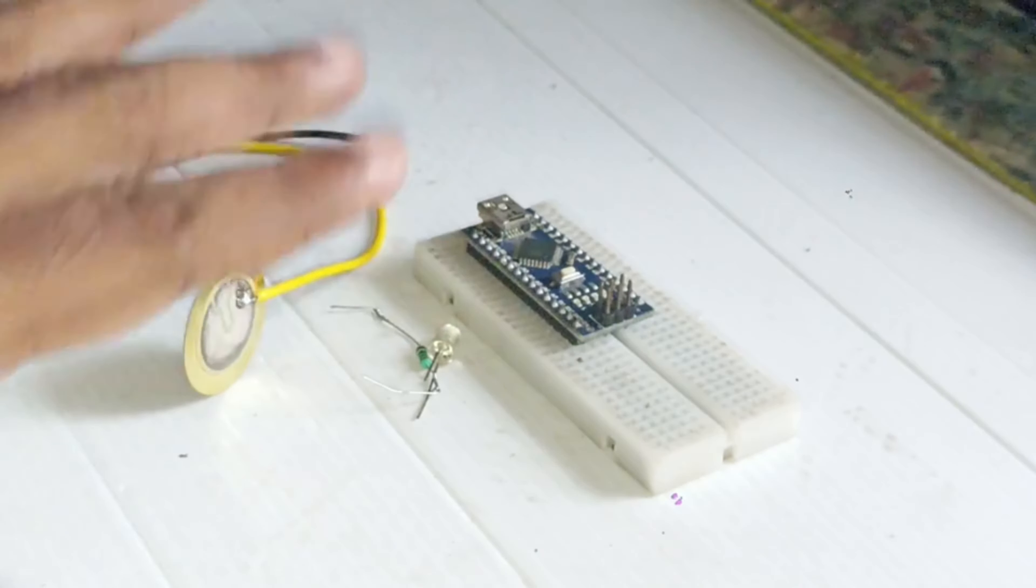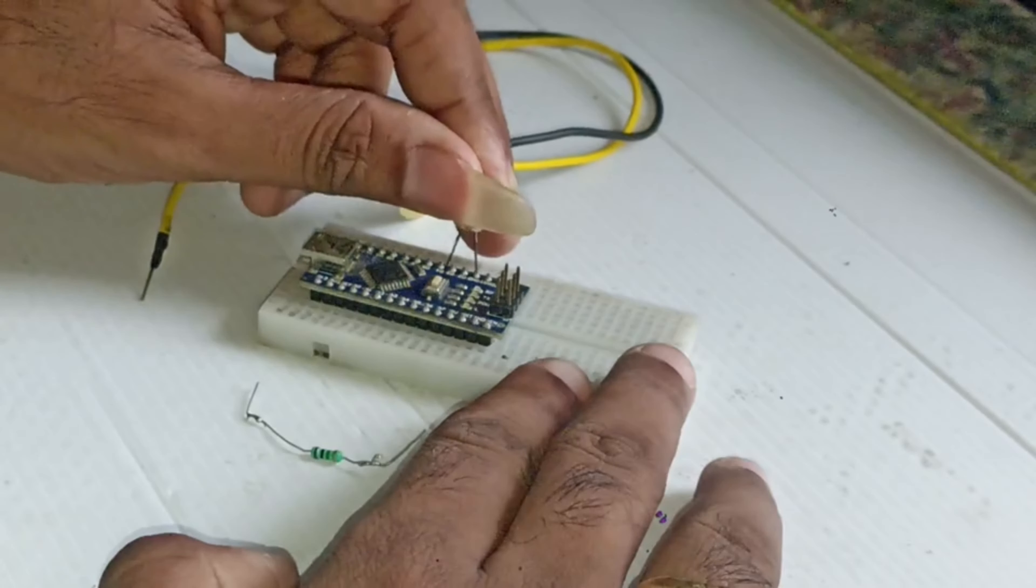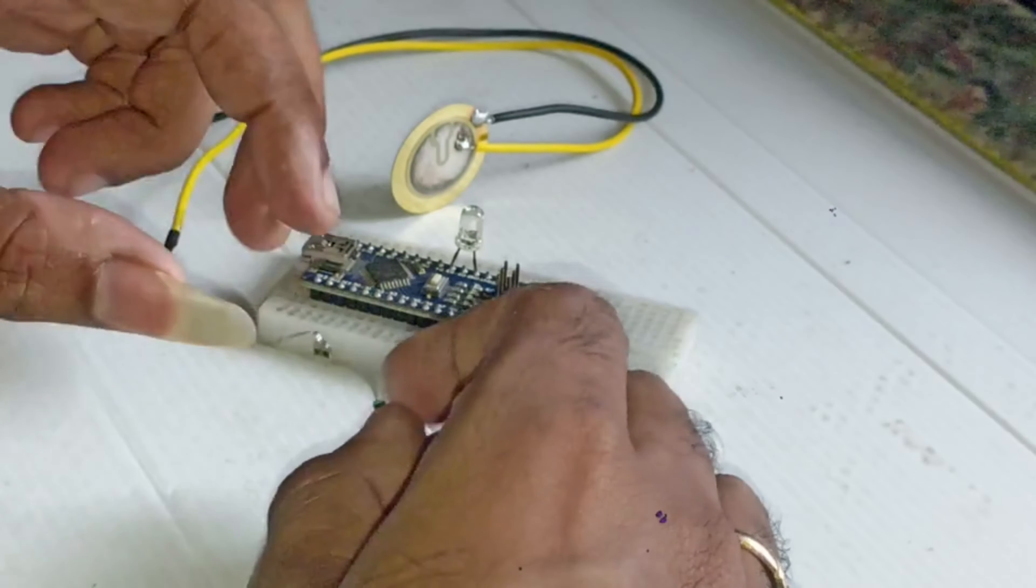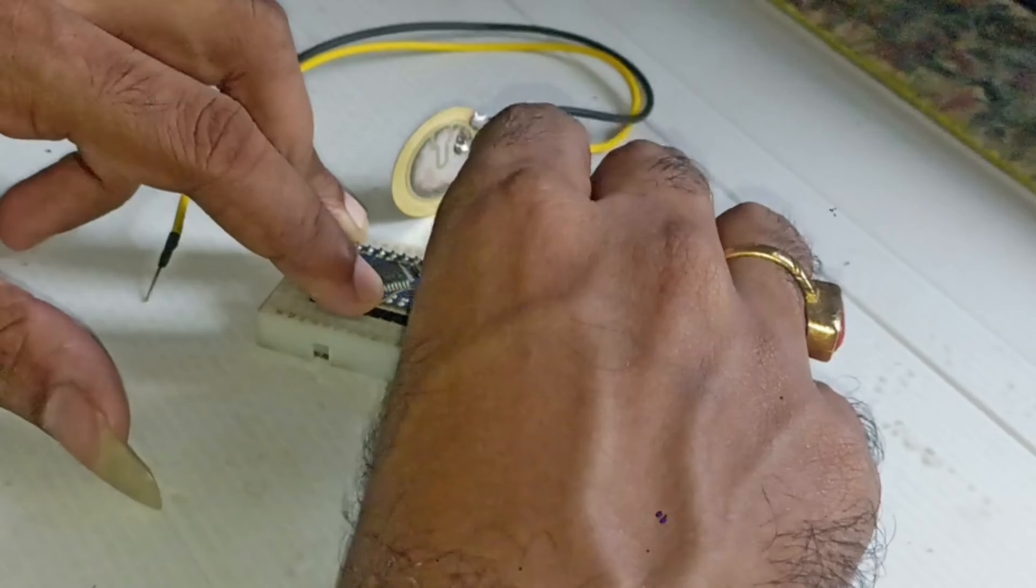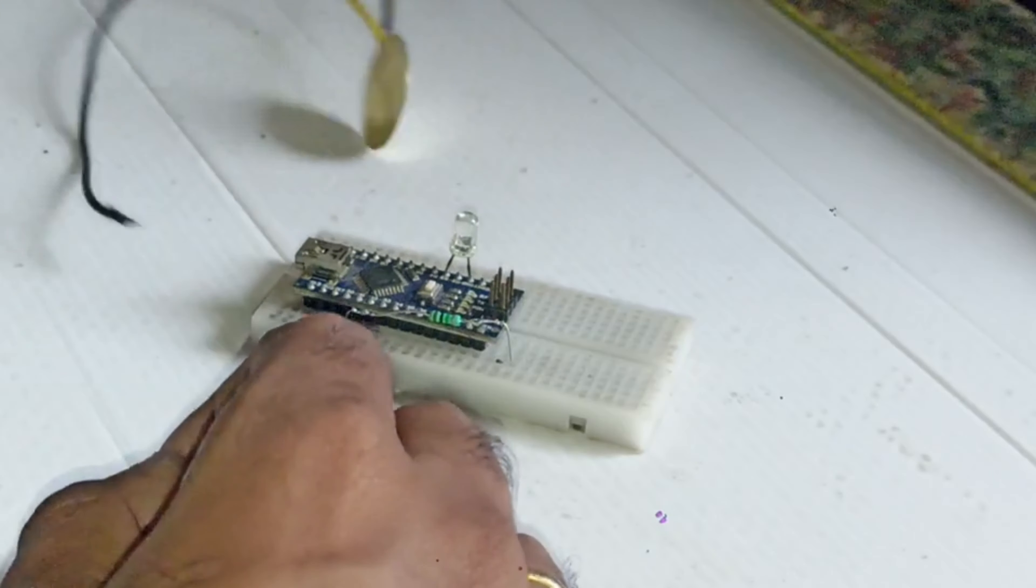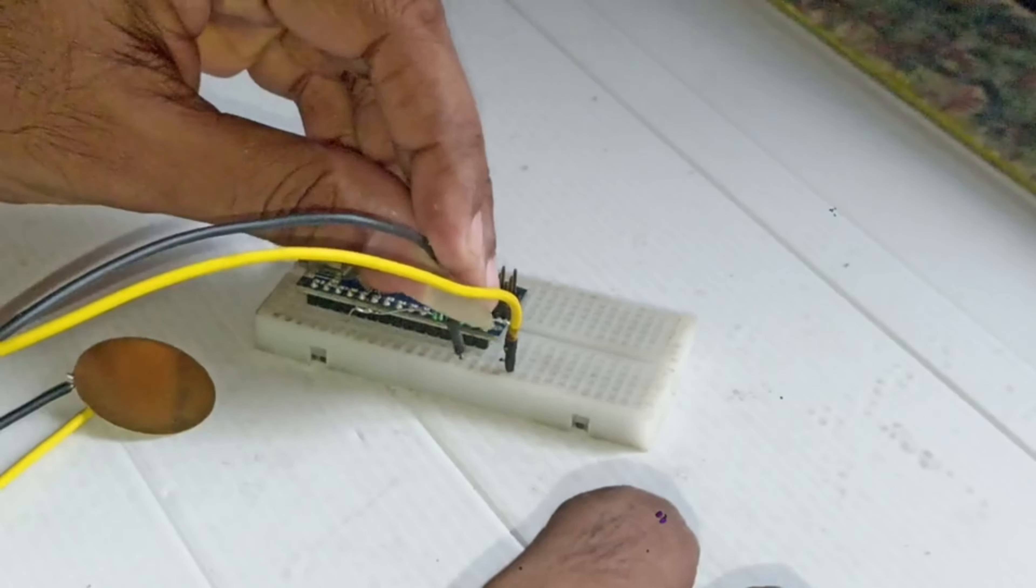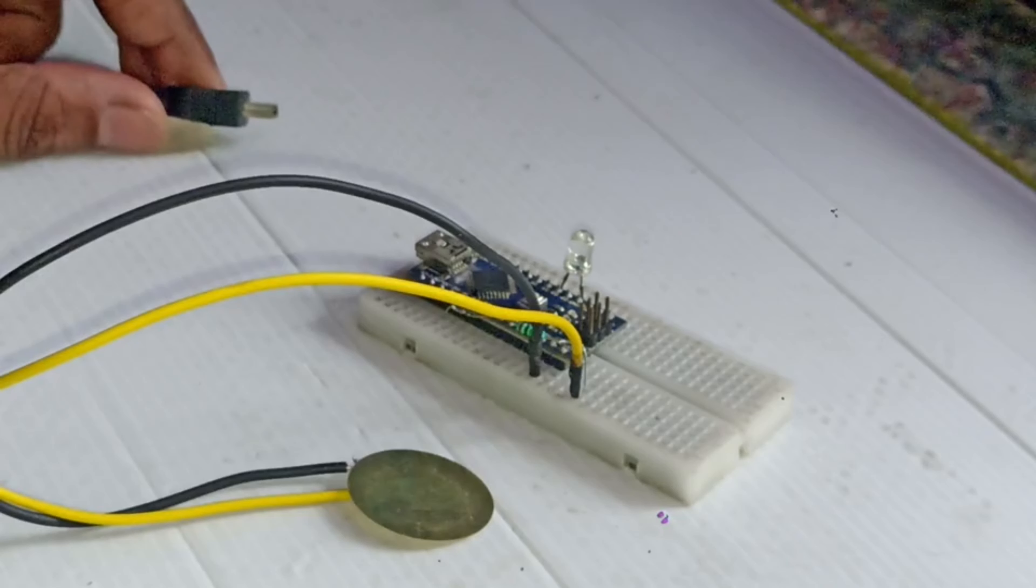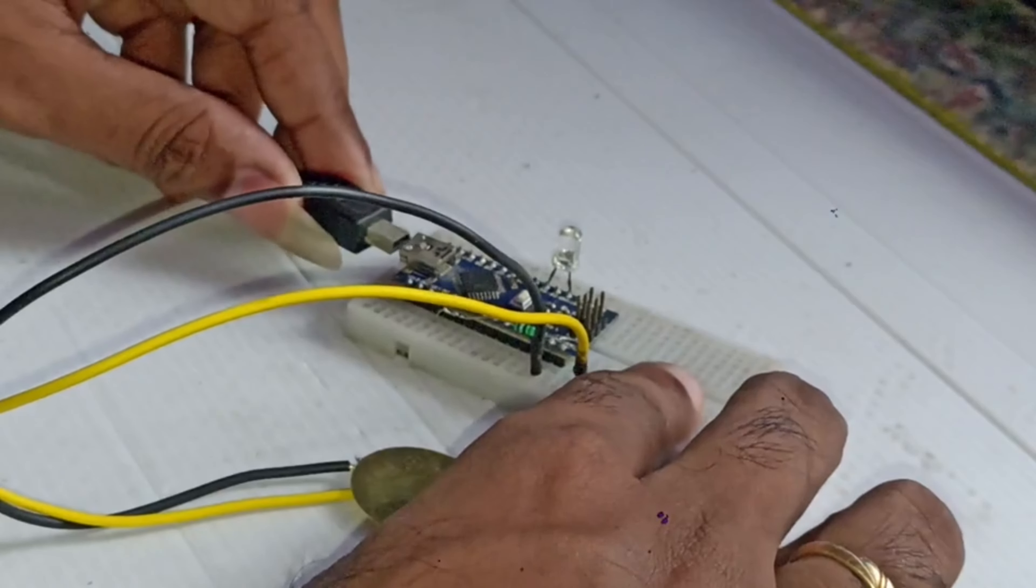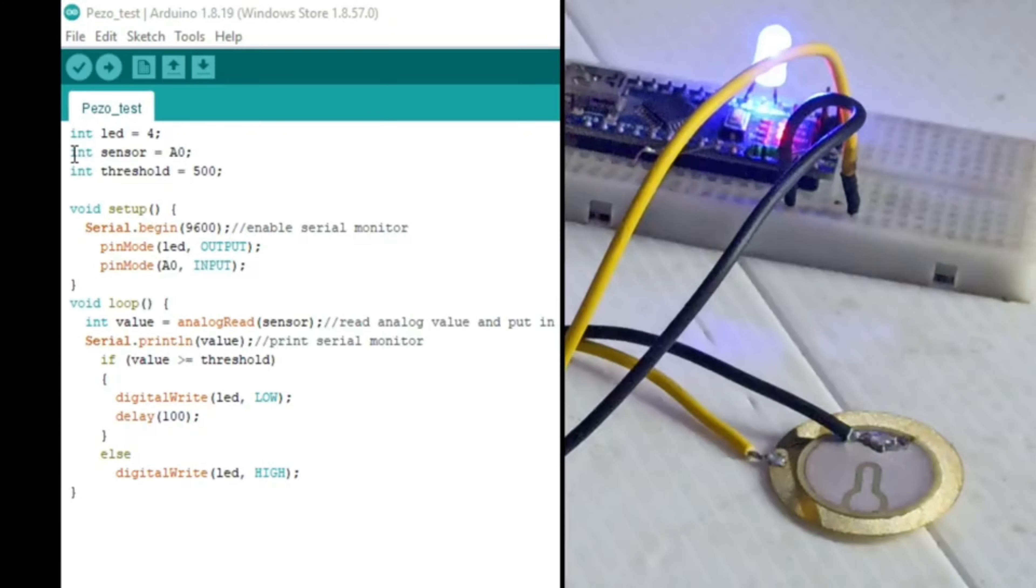Okay so now I'm gonna do the circuit connection and the circuit diagram is already given in the link. Check out the description, there you can find the link to the circuit diagram as well as the code. Both are available so you can check out that. After completing the circuit I am connecting the Arduino Nano to my computer so that I can upload the codes.